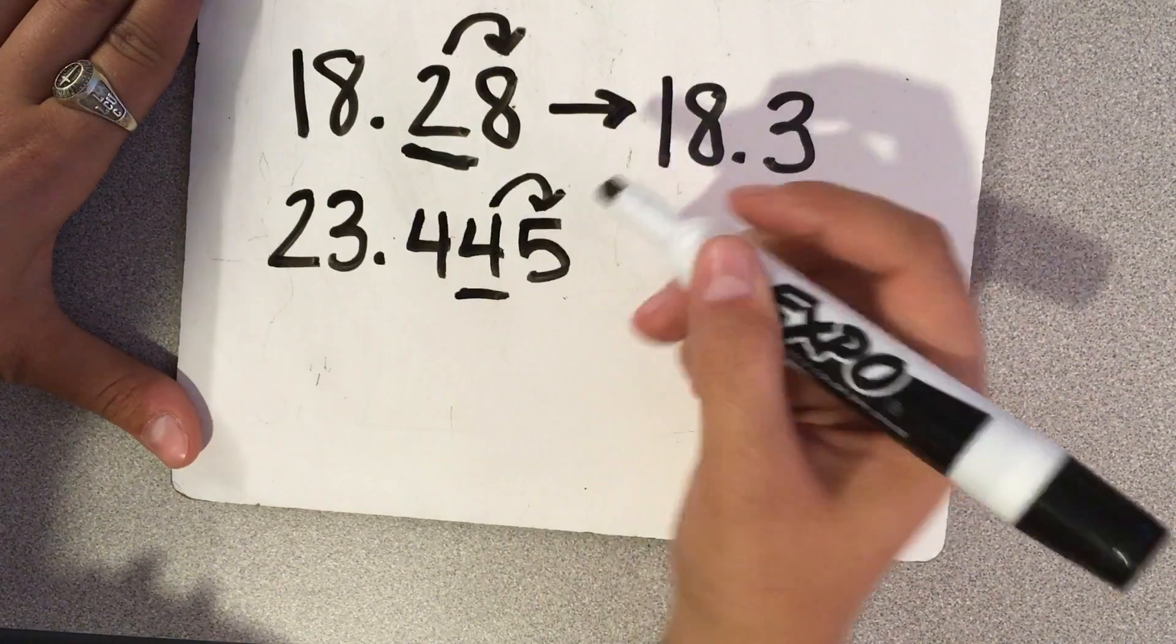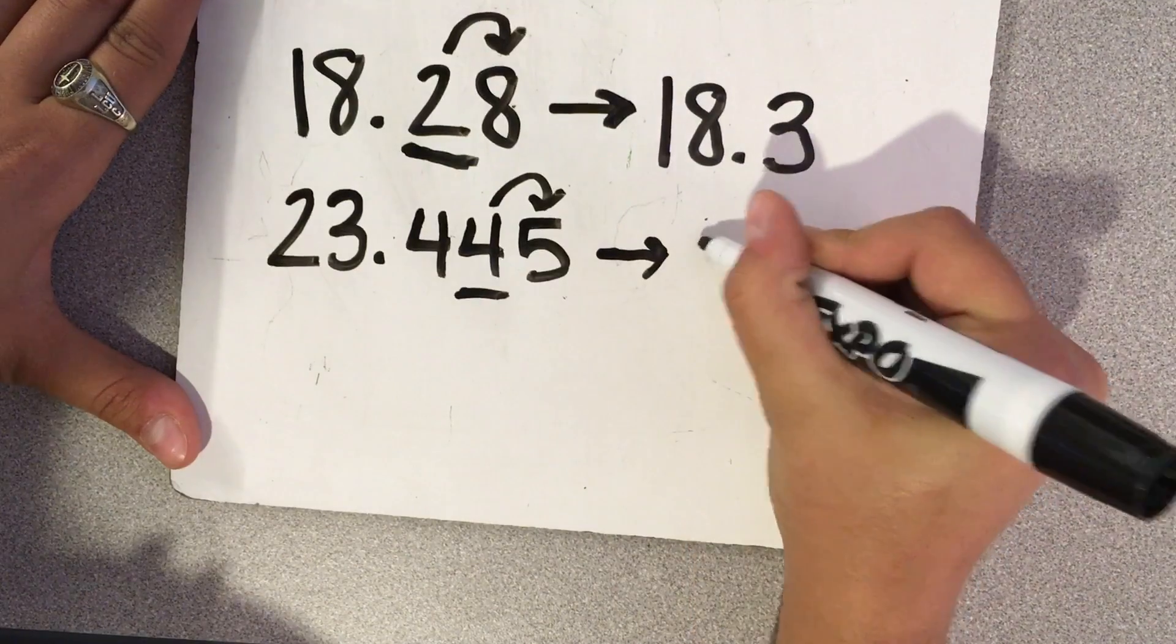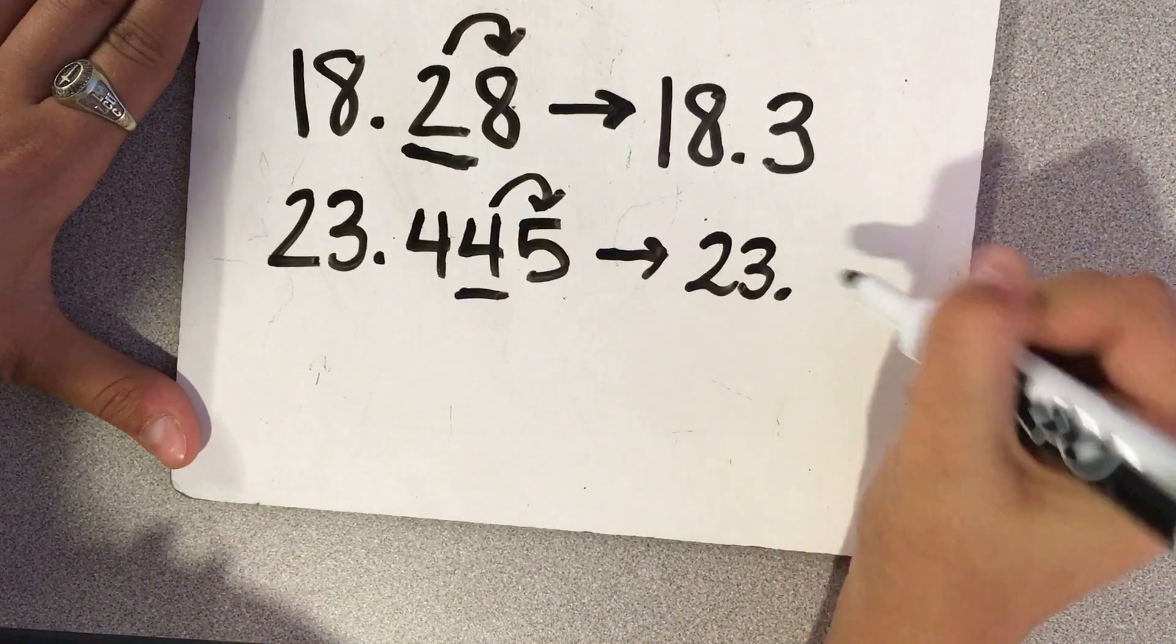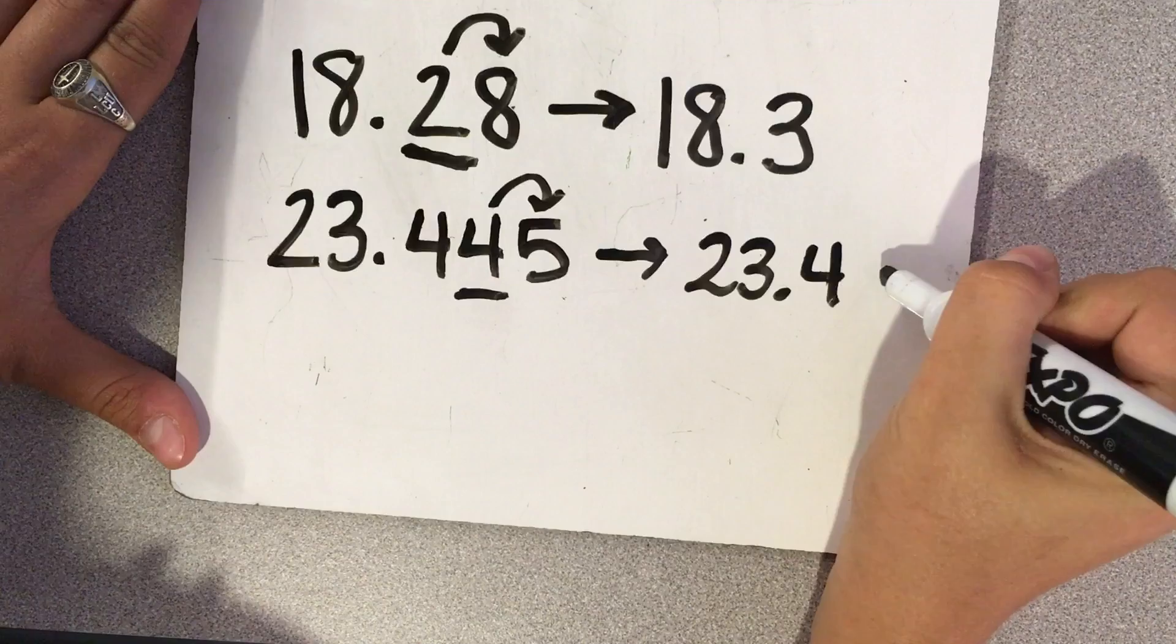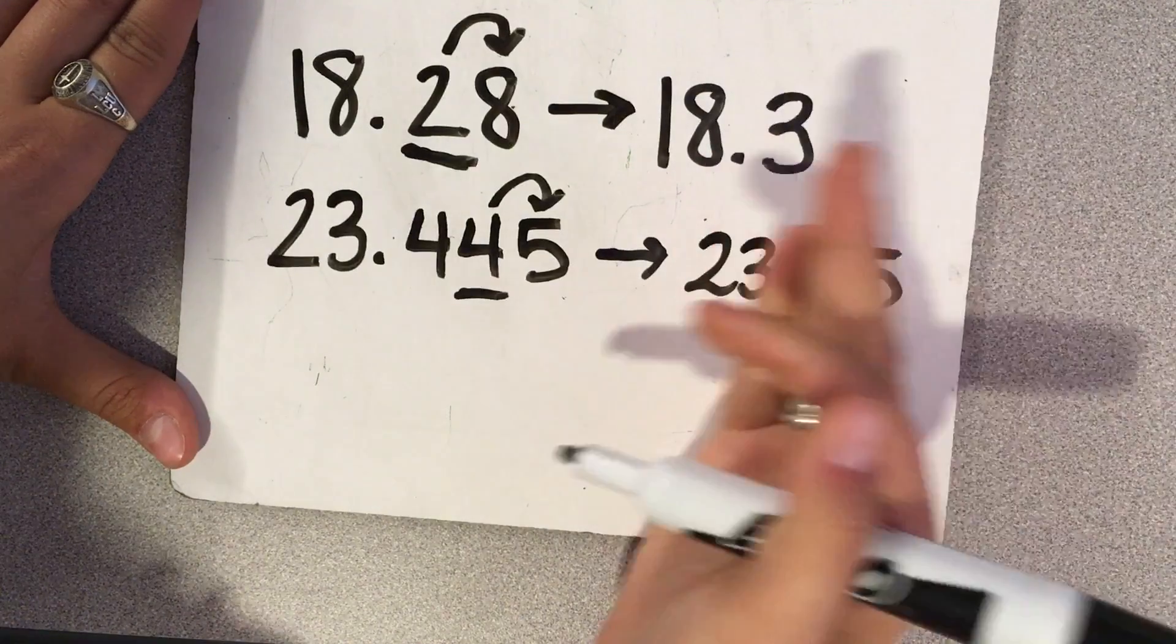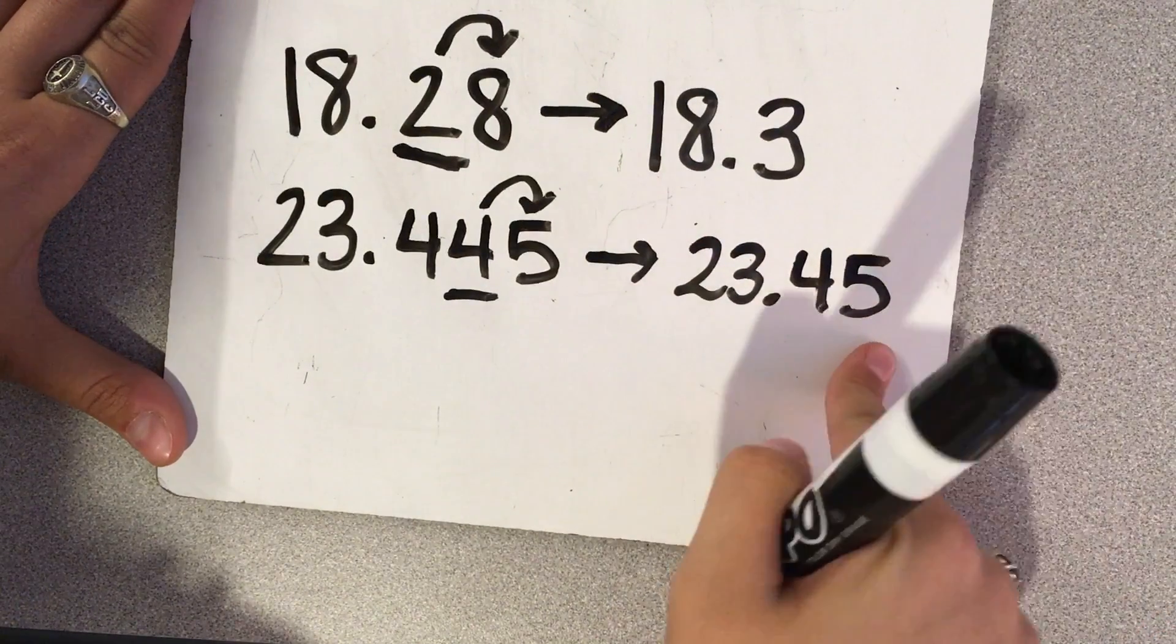so it tells this 4 to go up. So you keep everything the same, except now when you get to the hundredths place, you raise it one more, and you leave it because it's only asked you to round to the hundredths.